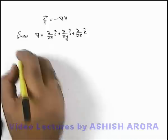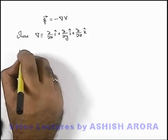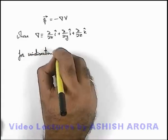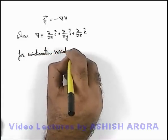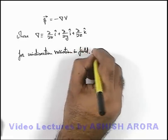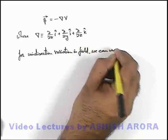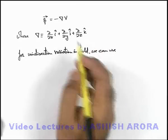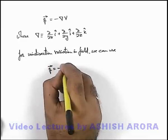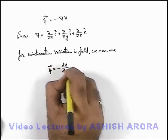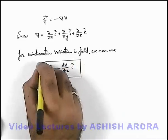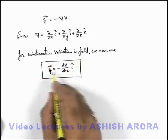In this situation, for unidirectional variation in the field, if g is varying only along the x direction, g can be written as the negative of dV over dx times î, since it is only varying along one direction.